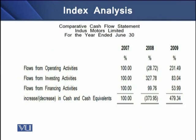In the cash flow statement index analysis, we see that in 2008, cash flows from operating activities were 28.72% of 2007, while in 2009 this was approximately 231–242% of 2007 — meaning net cash flows from operating activities in 2009 were more than double those of 2007.